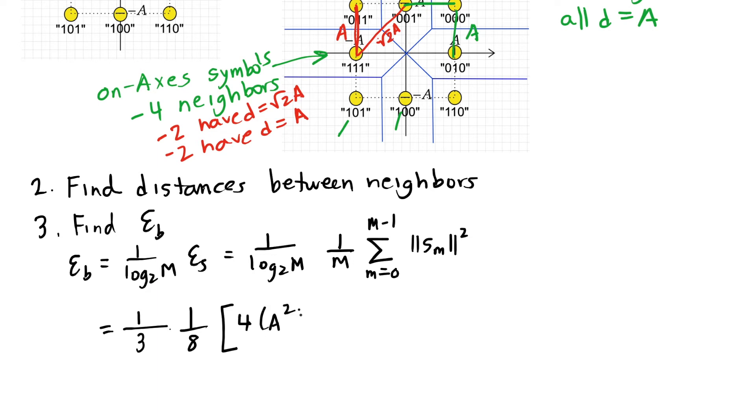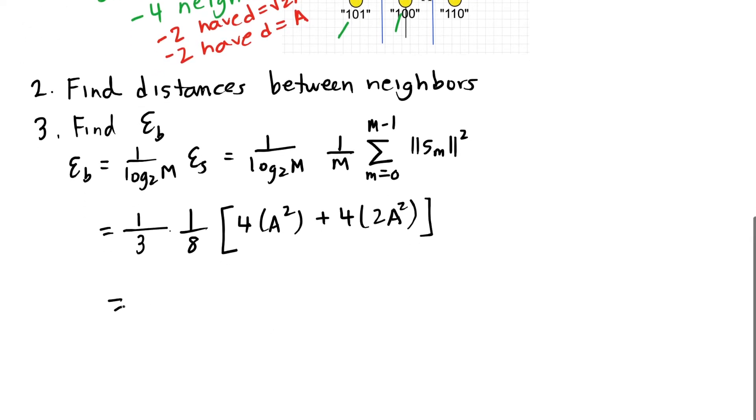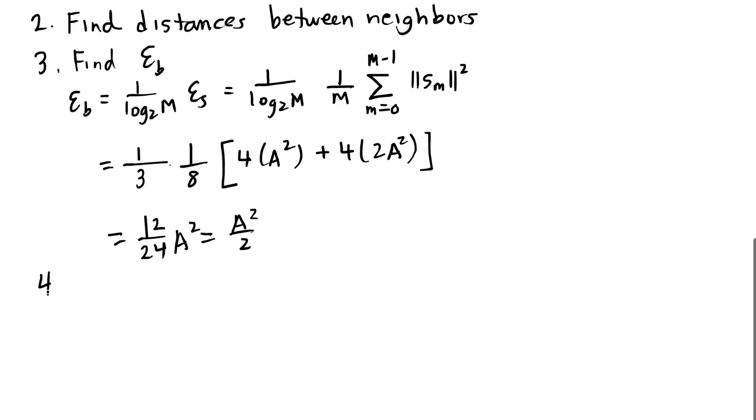I'm going to have 4a squared plus 4 times 2a squared. These are my squared distances. So when I add all that up and I get 24 on the bottom, I have 8 plus 4 or 12 on top, I get a squared over 2. And finally, I'm going to apply the union bound formula.